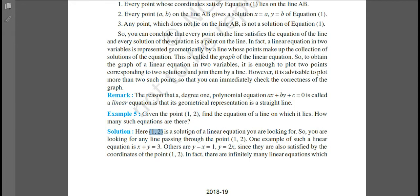Now here, 1 and 2 is a solution of a linear equation you are looking for. The solution we discussed yesterday. So you are looking for any line passing through the point (1, 2). One example of such a linear equation is x plus y is equal to 3. Another could be y minus x is equal to 1, or y is equal to 2x, since they are also satisfied by the coordinates of point (1, 2).